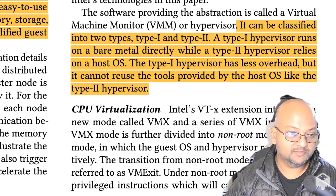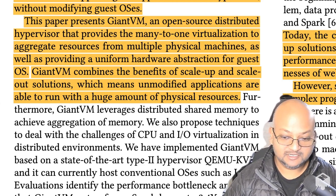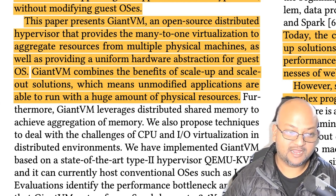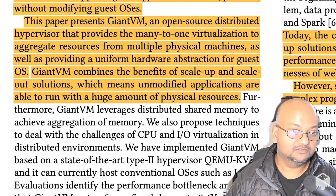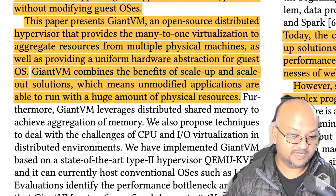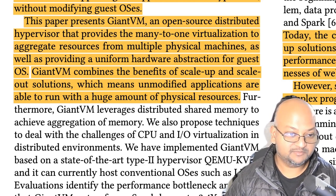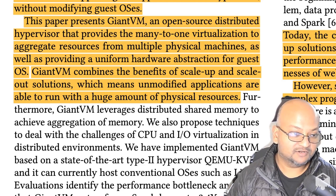This paper talks about type 2 hypervisors. The goal of the Giant VM system is to make it look as though your application has a huge amount of physical resources, but those physical resources are actually spread across many different physical machines. Giant VM is the type 2 hypervisor that takes the RAM, CPU, and storage from many physical machines and exposes it as a single abstraction, making it look to the application running inside Giant VM as if it is just running on one machine with a ton of resources.